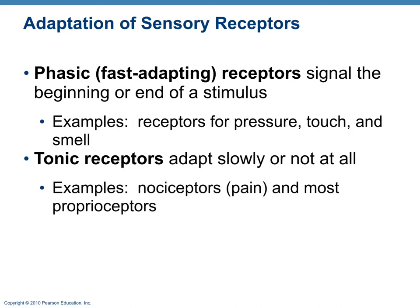There are two types of adapting receptors. Phasic or fast-adapting receptors — examples include receptors for pressure, touch, and smell — adapt very quickly. For instance, if you start cooking garlic, you smell it strongly at first, but after a while you no longer notice it. If you leave the room and come back, you smell it again — that's adaptation. Tonic receptors adapt very slowly or not at all.